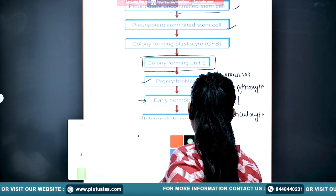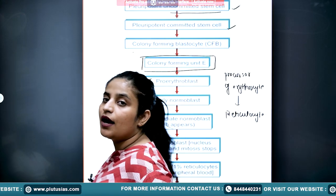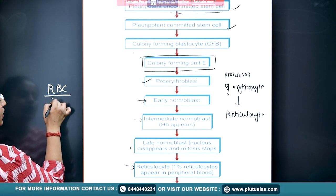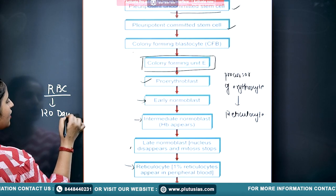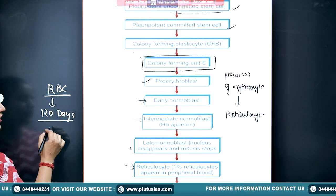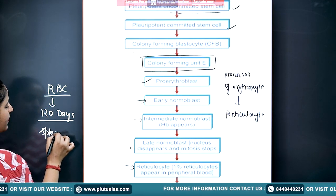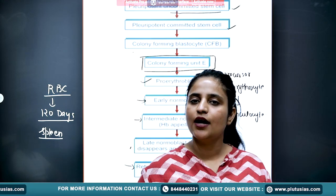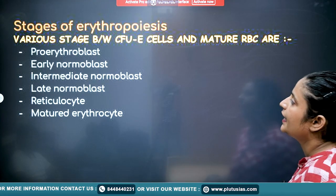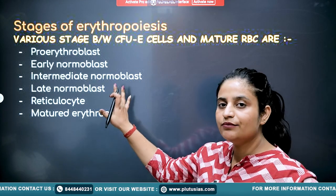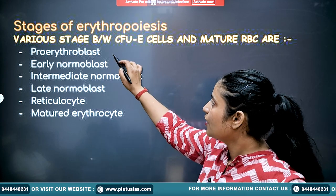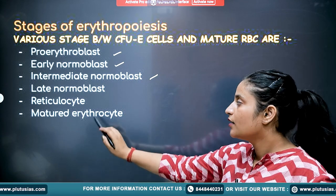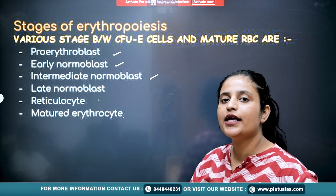RBCs have an average lifespan of about 120 days. After 120 days they are destroyed in the spleen, where macrophages carry out phagocytosis. The full sequence of stages is: pro-erythroblast, early normoblast, intermediate normoblast, late normoblast, reticulocyte, and mature erythrocyte.